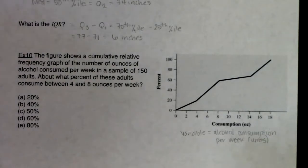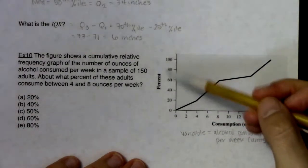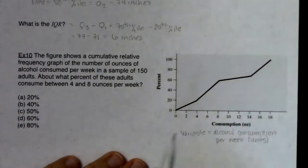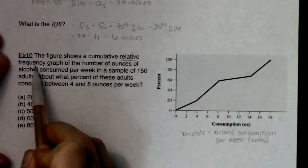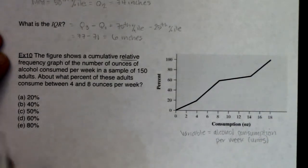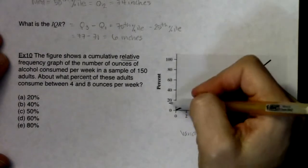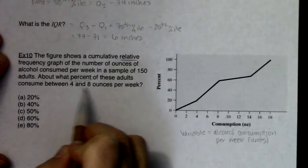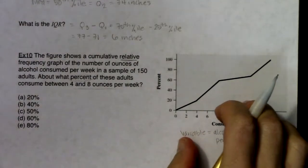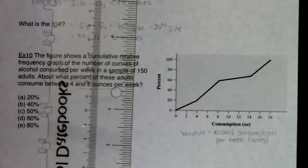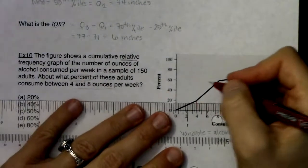It's another continuous numerical variable. Always start by asking what the variable is. The y-axis shows percentages. Cumulative graphs always increase left to right — it's always a bit nicer when they come with cumulative relative frequencies or percentages. The question asks 'what percent' so we want y-values; 'between four and eight ounces' gives us x-values. Let's go to x = 4 and find what y-value that corresponds to — that looks pretty close to 20 percent.